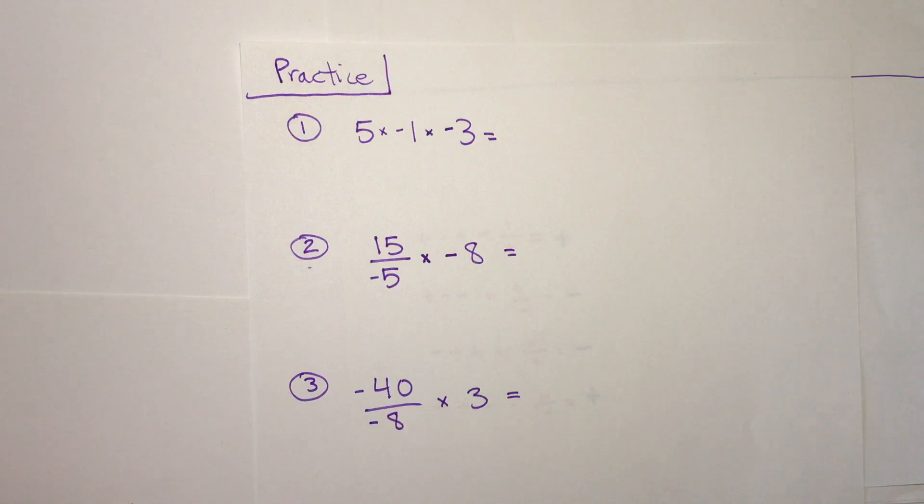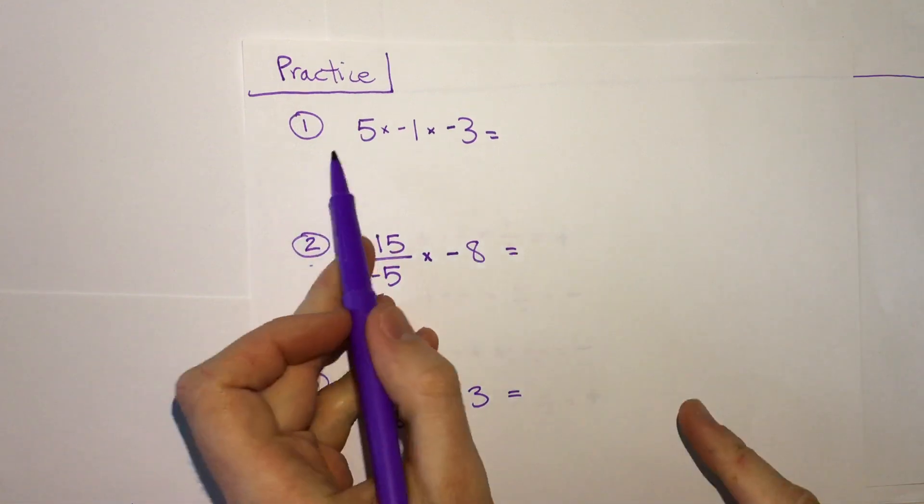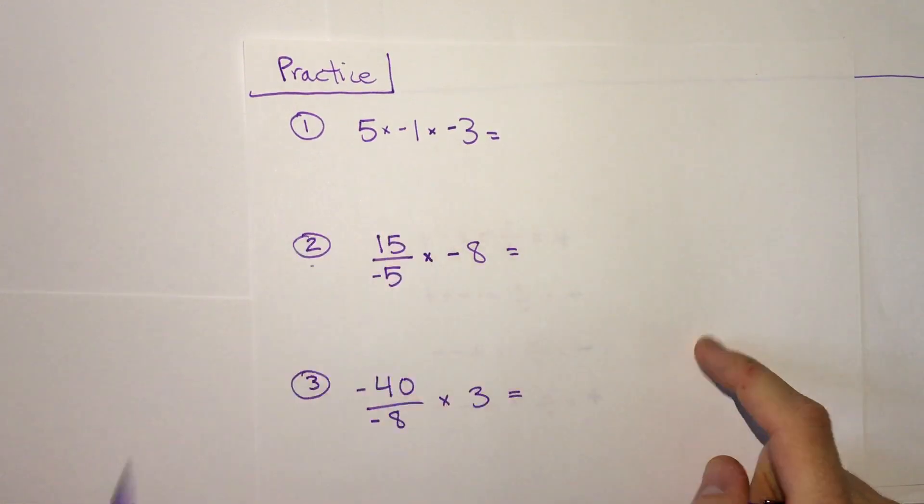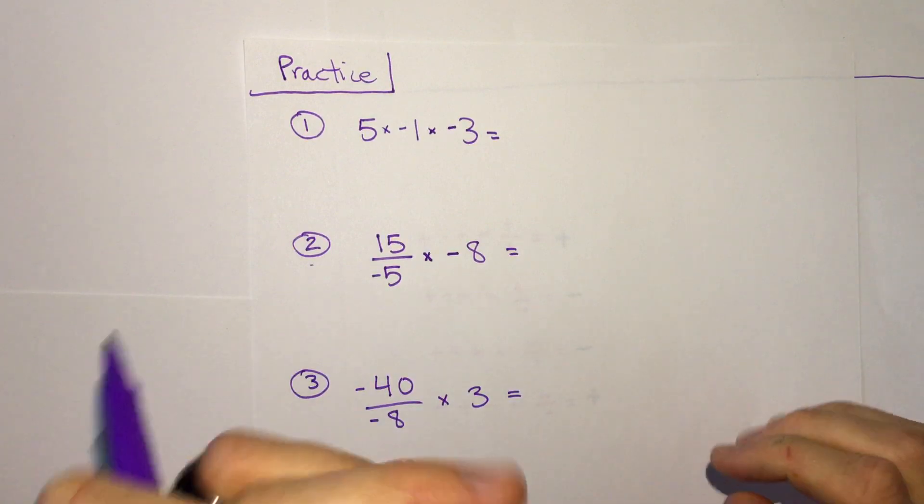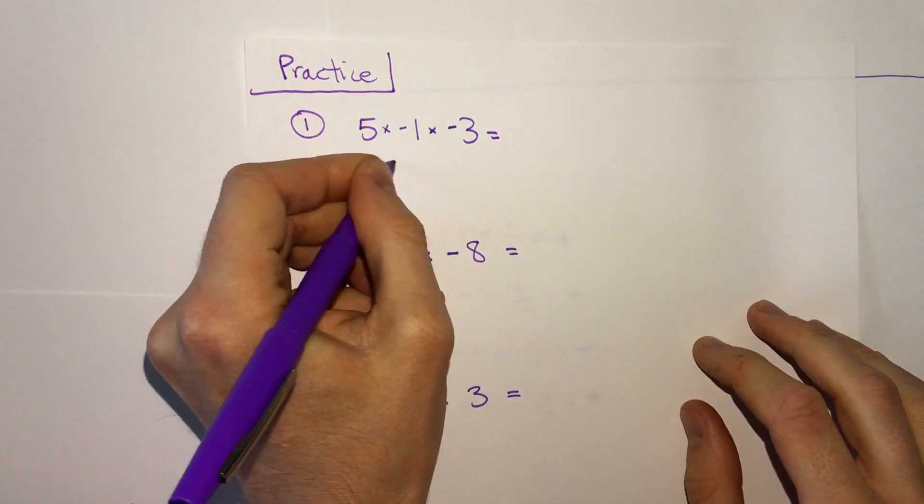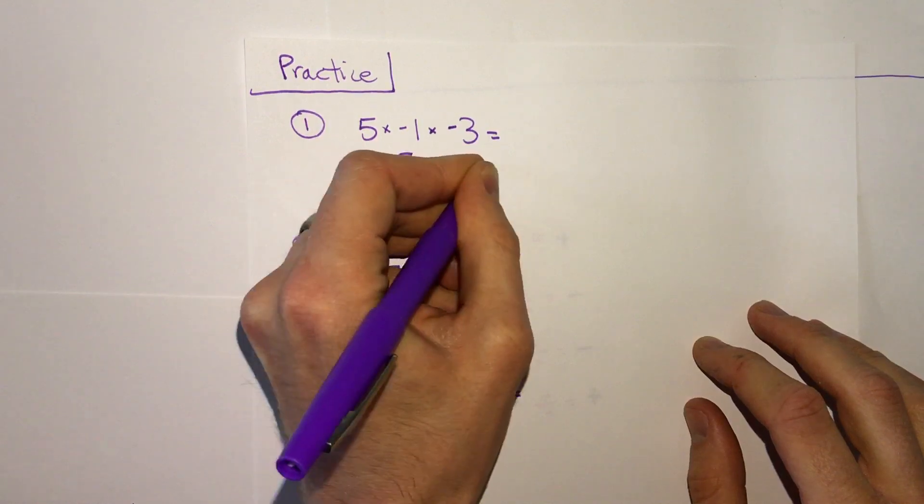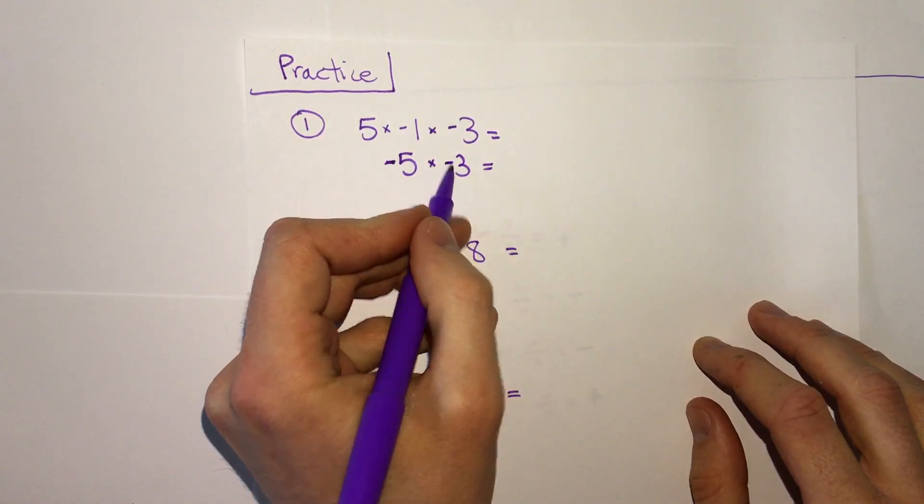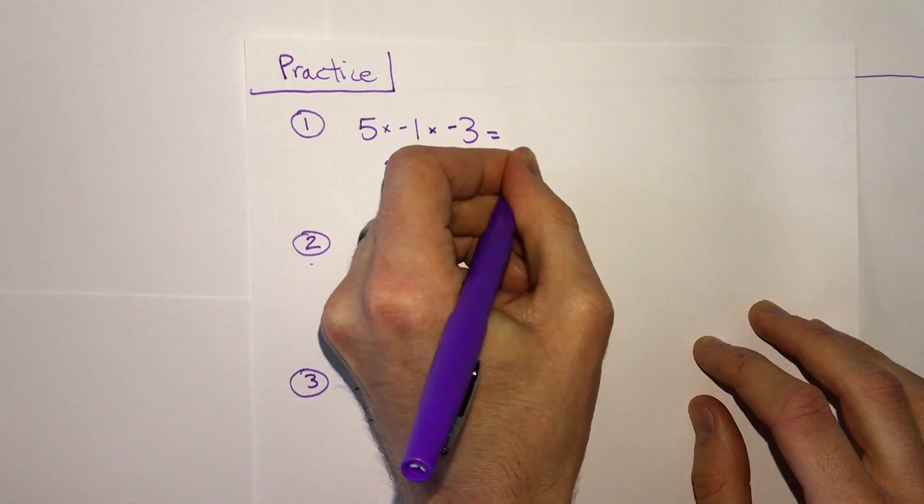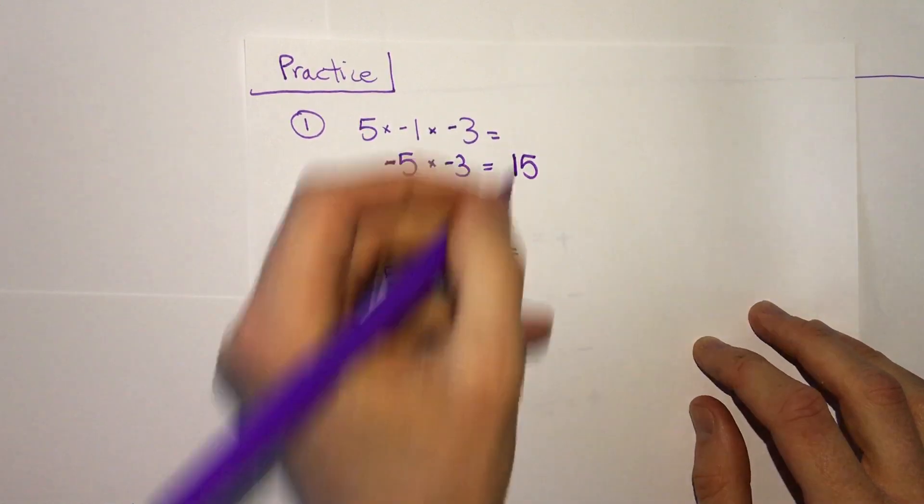Okay, hopefully you have had a chance to try these. Looking at number one to start with, we have 5 times negative 1. Positive times a negative is negative. So negative 5 times negative 3, and then a negative times a negative is positive. So we get positive 15 as our answer.